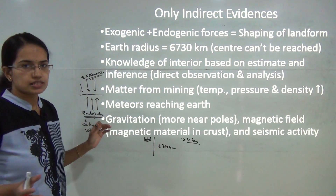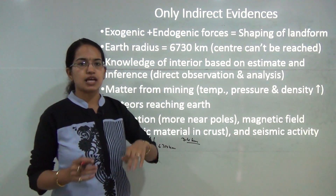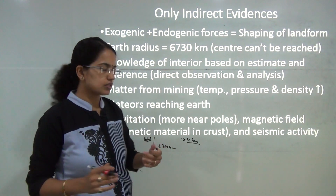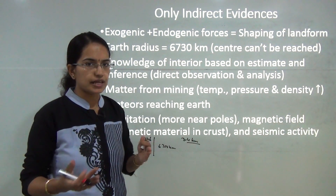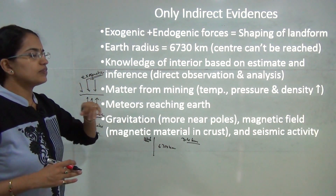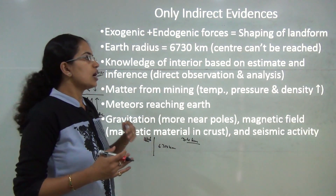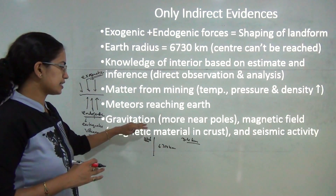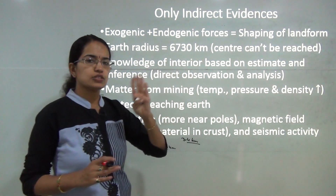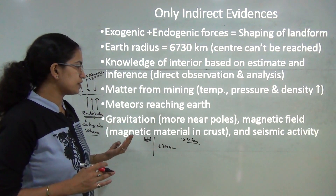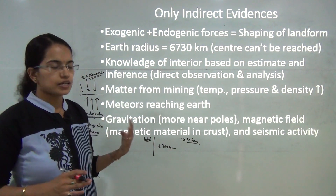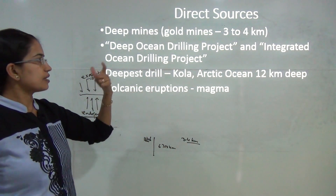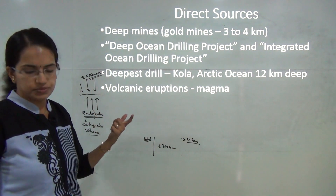There are also indirect evidences — for example, when a meteorite crashes onto the ground, the collision and the hole dug by the meteorite gives us knowledge about the interior of the earth. Additionally, observations and estimates contribute to our understanding. Three important factors affecting this knowledge are gravitation, which is stronger towards the poles than the equator; the magnetic field, based on the magnetic properties of materials in the crust; and seismic activity.